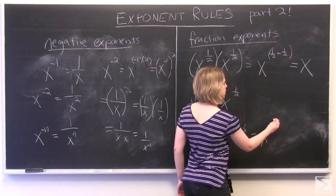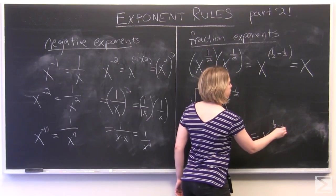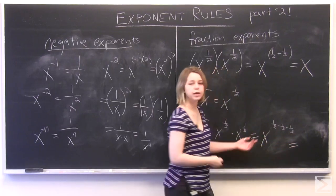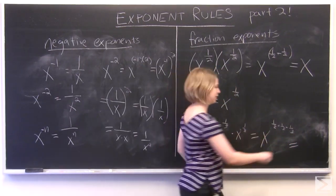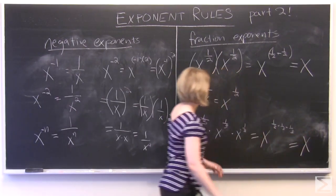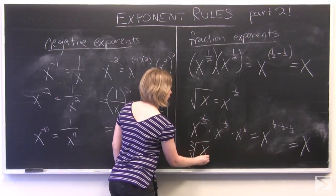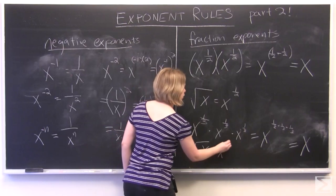So we have x to the power of 1 third plus 1 third plus 1 third, which is equal to x to the power of 1, which is simply x again. So the cube root of x is equal to x to the power of 1 third.